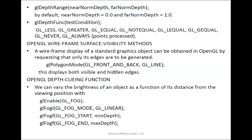For the depth cue function: whichever part of the object is near to the viewer, its intensity is increased so the viewer perceives that object as close. If a surface is far from the viewer, its intensity is reduced. This depth cue function is used to convey distance through intensity. This completes our fourth module. Thanks for listening.